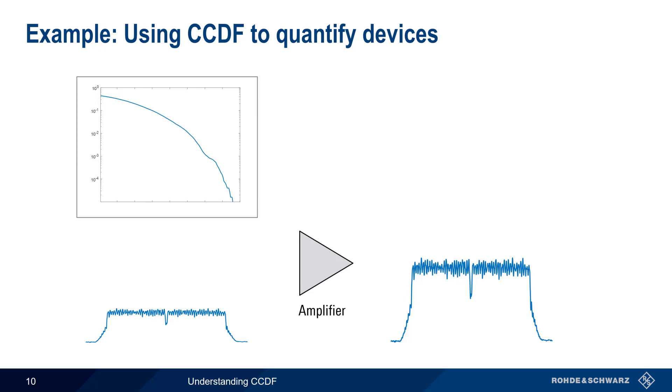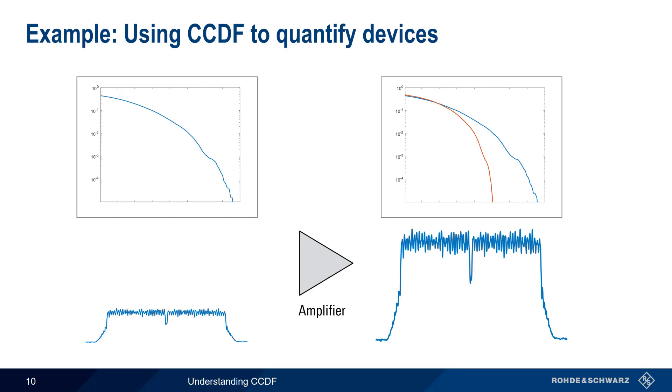On the other hand, if the amplifier output is distorted, the CCDF curves will be different. In this particular case, the reduction in CCDF between the input and the output signal shows that the amplifier has gone into compression. This same methodology can be used with many other active and passive components as well.